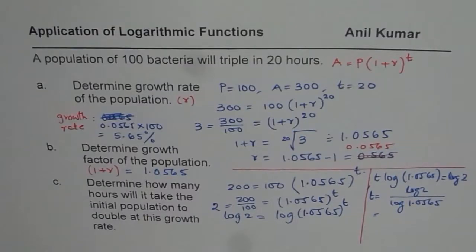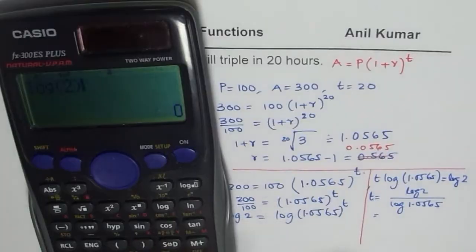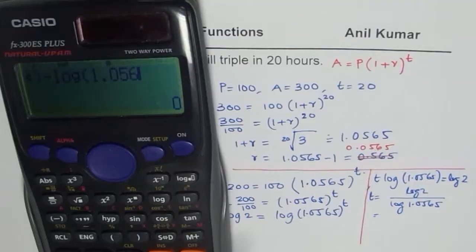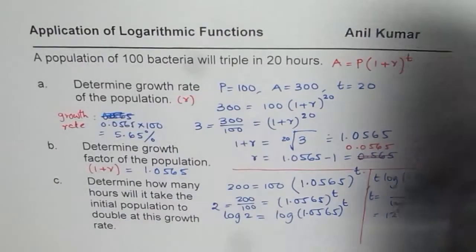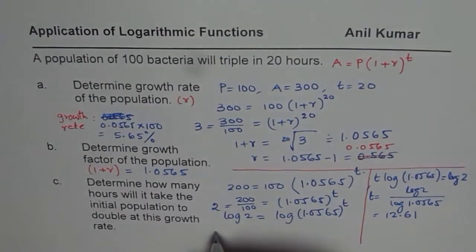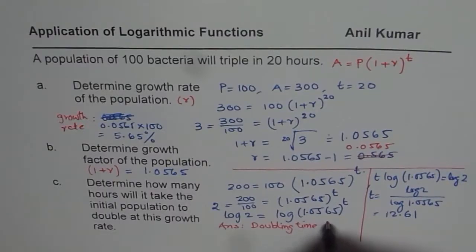So we can use the calculator to find this answer. So we have log 2 divided by log of 1.0565, and that is equals to 12.61. So amount of time it will take us around 12.6 hours. So the doubling time, we can write down as our answer, that doubling time is approximately 12.6 hours.